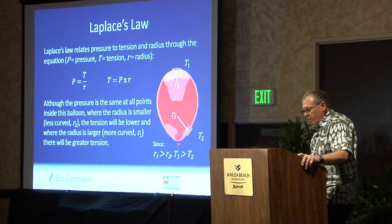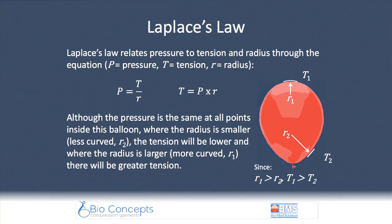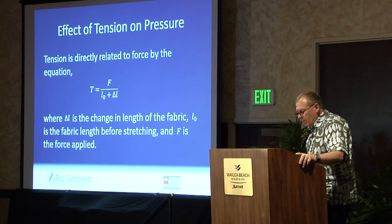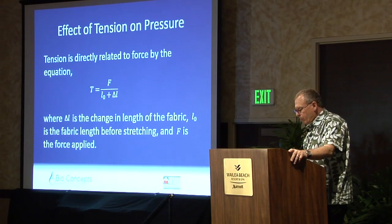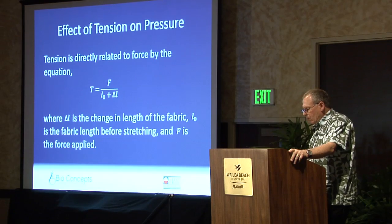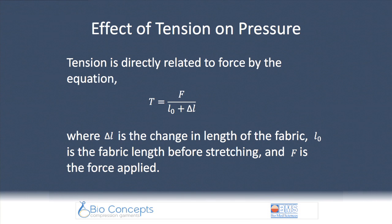This is the actual law: P equals T over R — pressure equals tension over radius. The first thing that you notice is the directness of the relationships between the three elements of the equation. Increasing or decreasing one of the elements means an automatic and direct change to at least one of the other two. It is unavoidable. It is the law. In the application of Laplace's Law to a cylinder enveloped with an elastic fabric, tension is the force required to stretch the fabric a given amount. Once this is determined, the value is inserted into the equation, and then pressure can be calculated for a given radius.